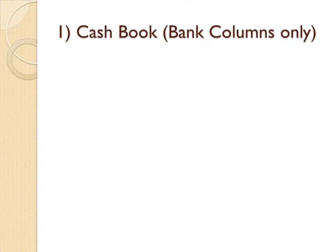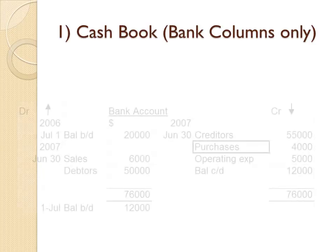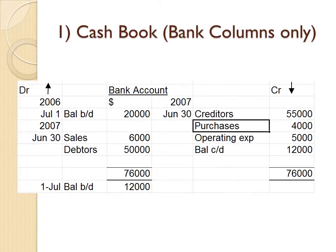The first record we want to analyze is the cash book — specifically the bank columns only. On the debit side we have receipts, money coming in. On the credit side we have payments, money going out.